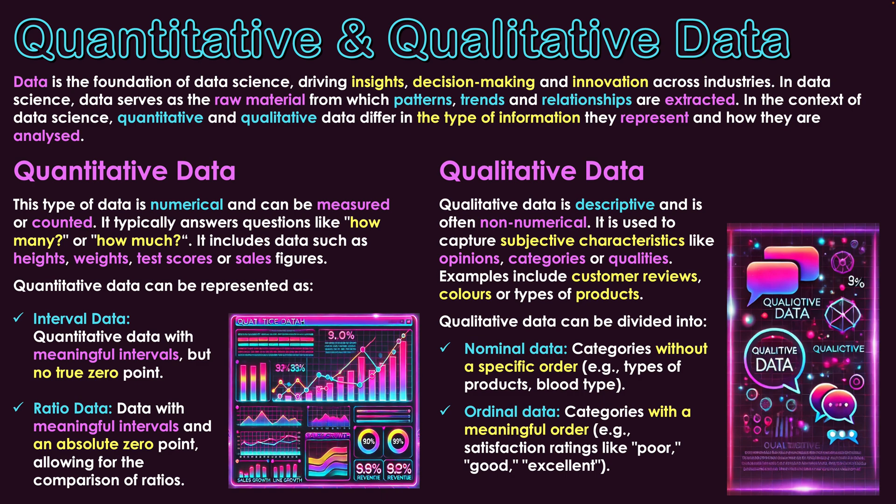Nominal data categorizes without a specific order. We are classifying characteristics, but one classification is not necessarily superior to another. For example, blood type — whether A, B, O, or the many variations — doesn't mean one blood type is better than another; we're just classifying them based on their makeup. It could also be types of products at a store: hats, shirts, pants — different classifications of clothing where one is not superior to the other. Things are put into specific categories so they can be organized and more meaningful for the data set.